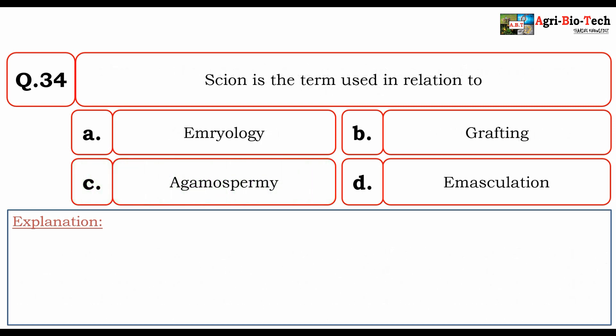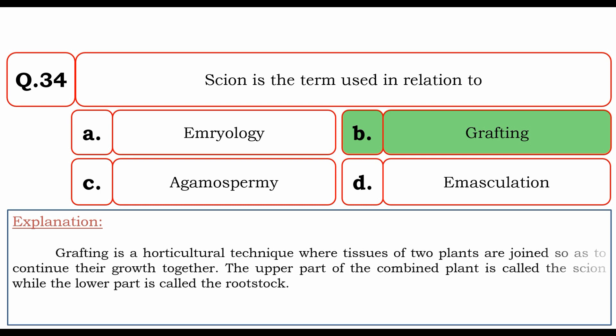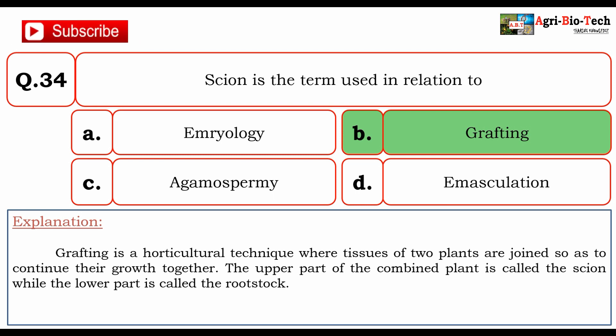Next question: 'scion' is a term used in relation to — A) embryology, B) grafting, C) agamospermy, or D) emasculation. The correct answer is B) grafting. Grafting is a horticultural technique where tissues of two plants are joined so as to continue their growth together. The upper part of the combined plant is called the scion, while the lower part is called the rootstock.